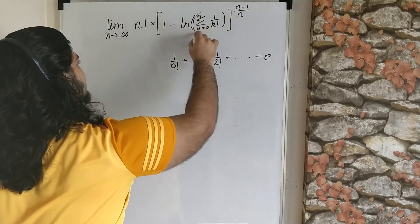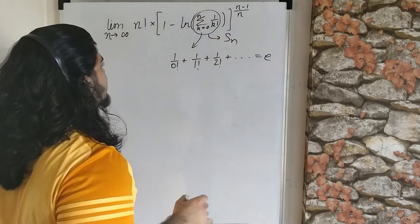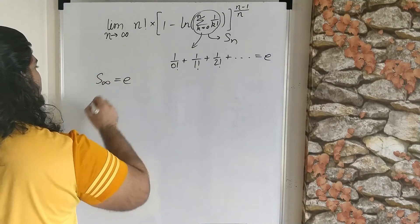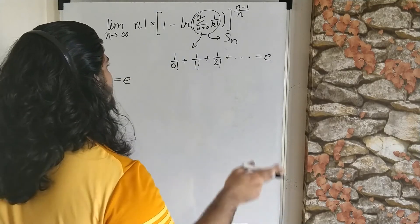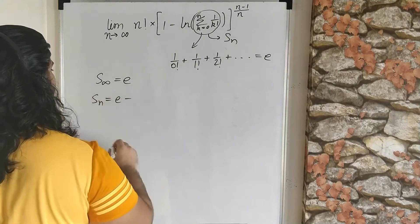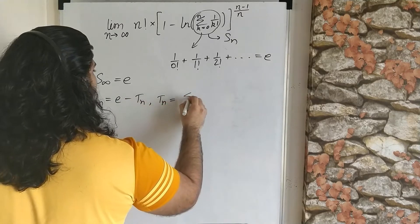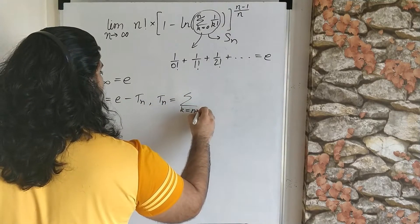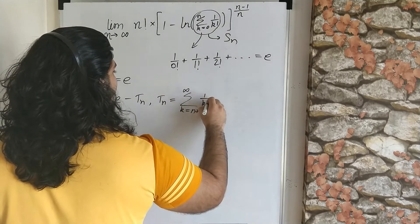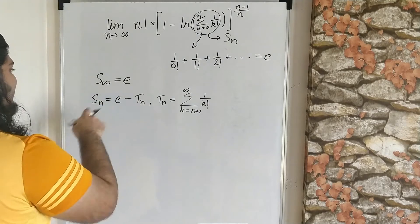Instead of writing this summation out every time, we'll call it S_n, so S_infinity equals e. We can write S_n as e minus T_n, where T_n equals the sum as k goes from n+1 to infinity of 1 over k factorial. So S_n plus T_n equals e for all n.